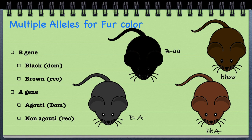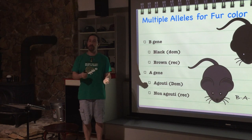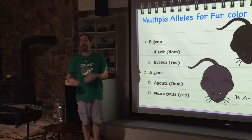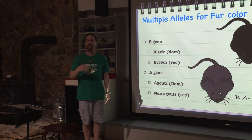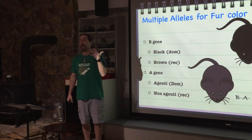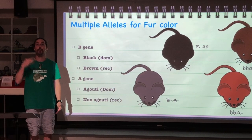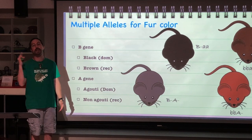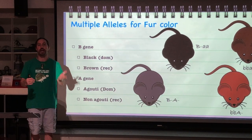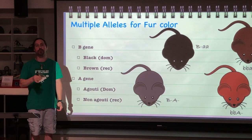Black agouti means dominant for both the black gene and the agouti gene. If it's black and not agouti, it must be homozygous recessive for the agouti gene. If it's brown, it's homozygous recessive for both. And if it's brown agouti, the first gene is homozygous recessive but the second gene carries a dominant agouti allele.